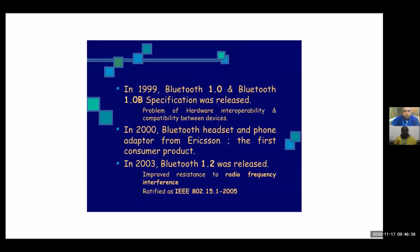In 1999, Bluetooth version 1.0 and version 1.0b specification was released. However, this version had problems of hardware interoperability and compatibility between devices. In 2000, a Bluetooth headset and phone adapter from Ericsson was released — the first consumer product.